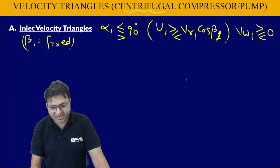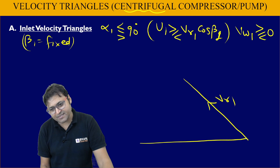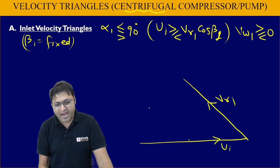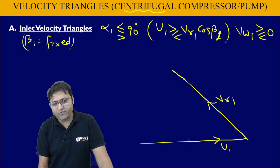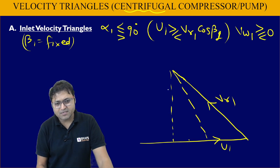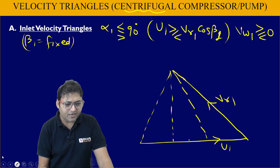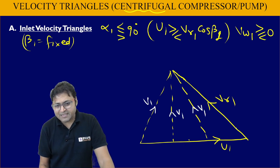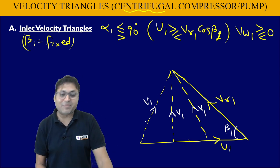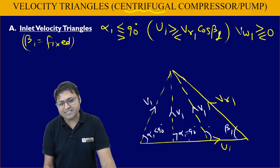There are three possibilities. Vr1 and U1 form the base, and V1 can take three positions. V1 can slope one way, V1 can be vertical (radial), or V1 can slope the other way. β1 is inside the triangle in all cases. When α1 is less than 90 degrees, α1 is inside the triangle. When α1 equals 90 degrees, it is radial. When α1 is greater than 90 degrees, α1 is again inside the triangle.